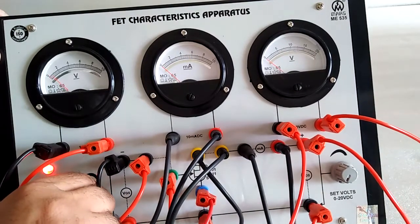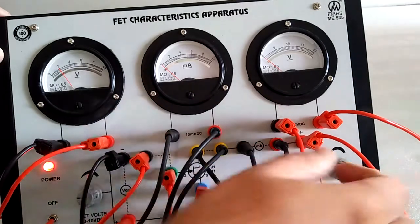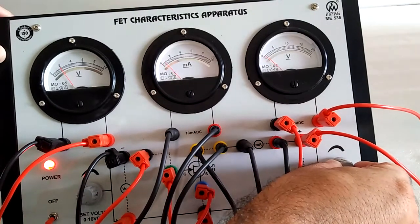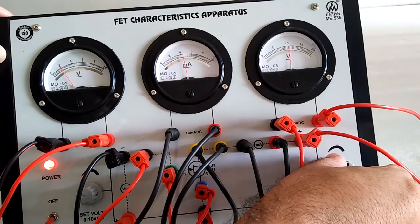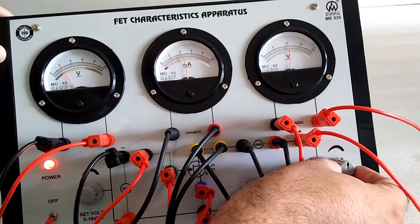Now the other set. Increase the voltage up to 2V VGS. Now current is stopped at lower value.